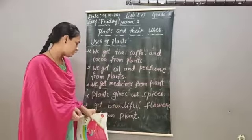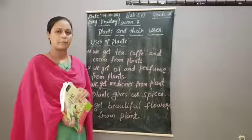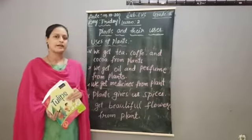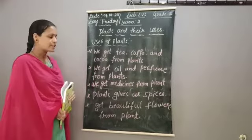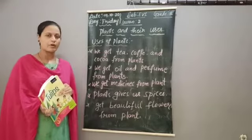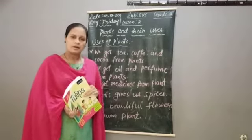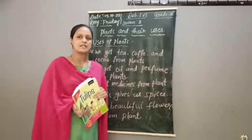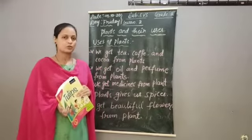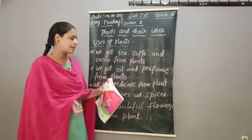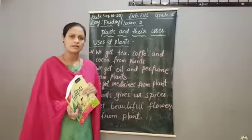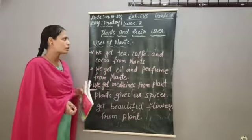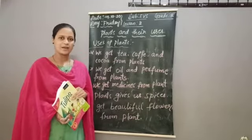We get beautiful flowers from plants in so many different colors. Most importantly, plants give us oxygen to breathe. Trees and plants give oxygen to all living things, and also provide shade and shelter for animals and birds. This is all about plants and their uses. Thank you.